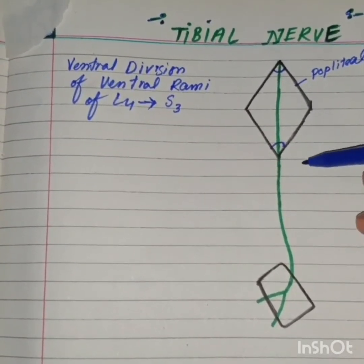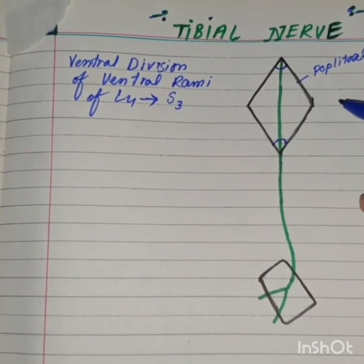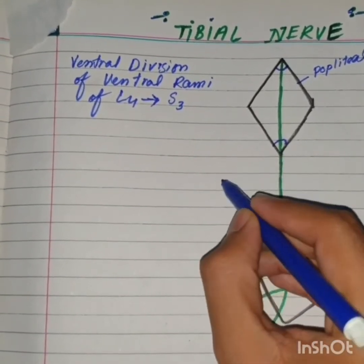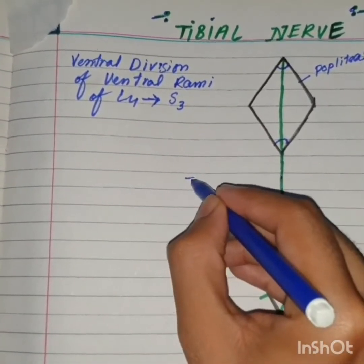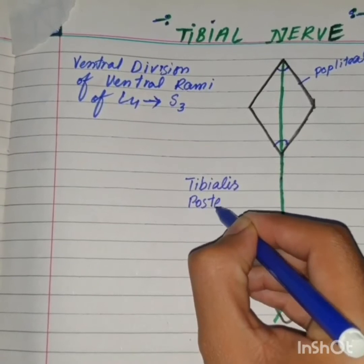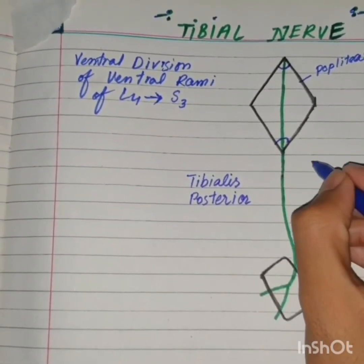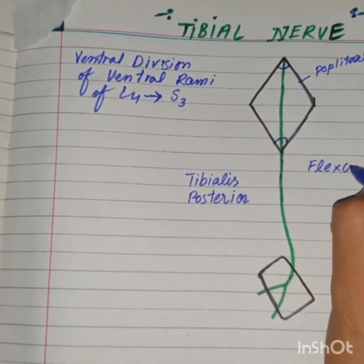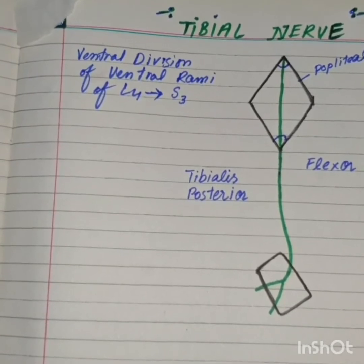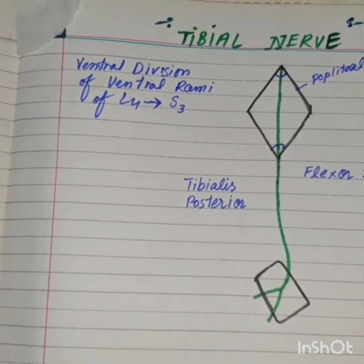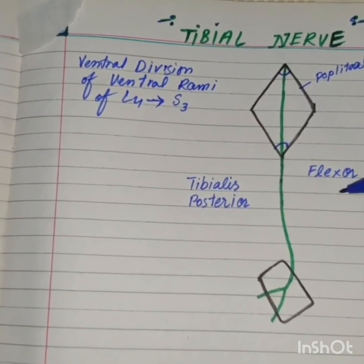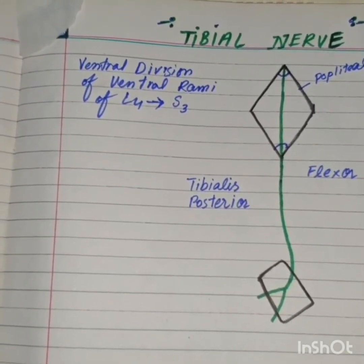Now the nerve enters the back of the leg. In the back of the leg, it lies between the tibialis posterior muscle and the flexor digitorum longus muscle. So the first landmark is the popliteal fossa, and the second landmark is between the flexor digitorum longus and tibialis posterior.